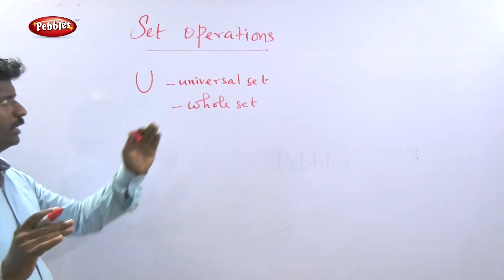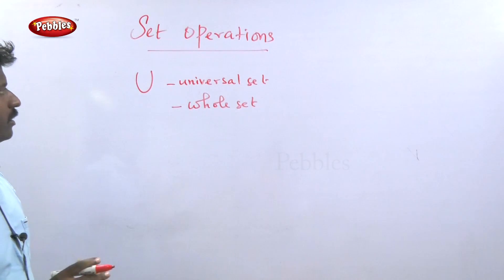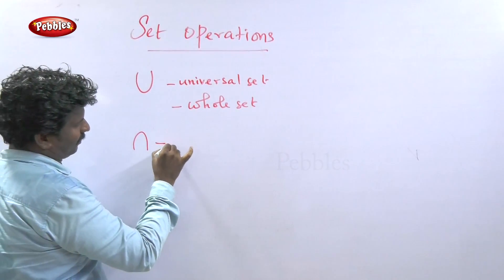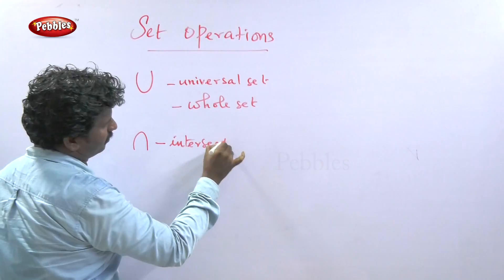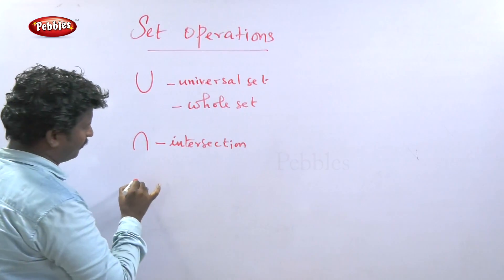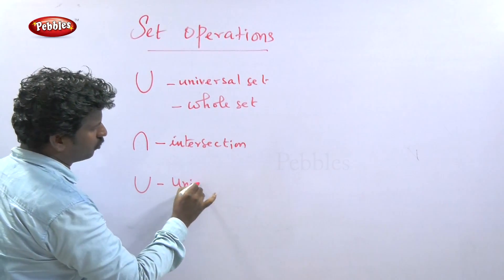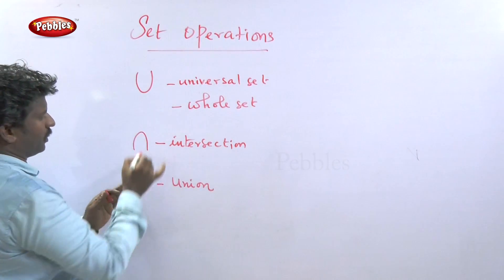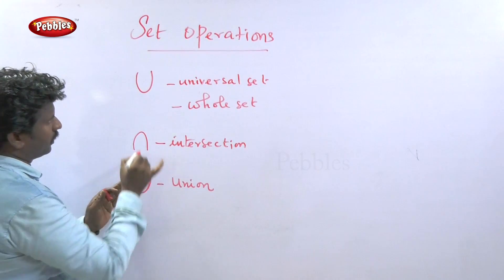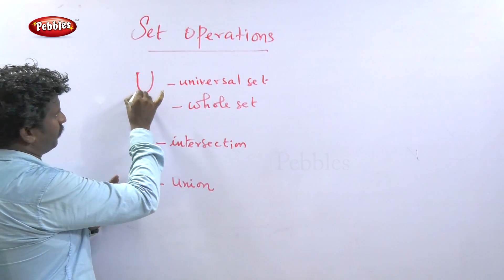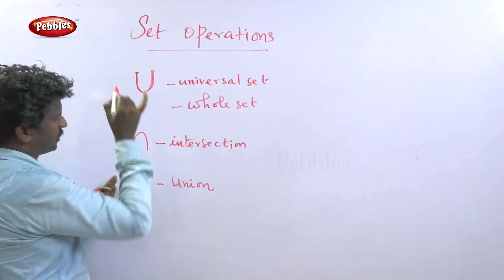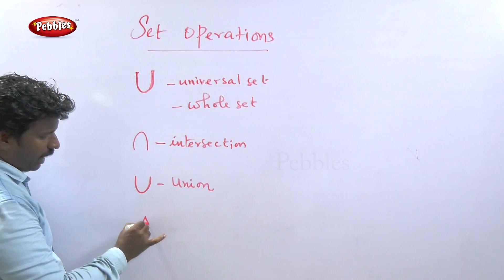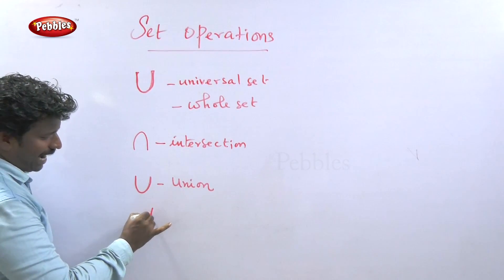The universal set is the whole set. Now let me show you the notations in set operations. This is the big size symbol for the universal set, this is union, and this is intersection.